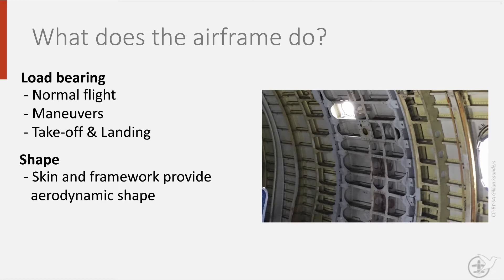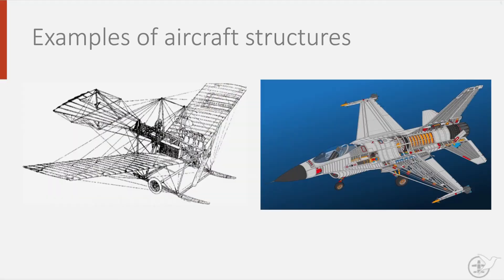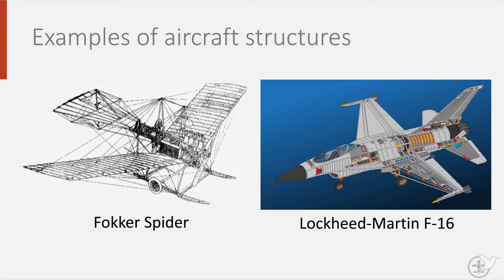Finally, at least nowadays, the airframe also provides those inside with protection from the environment. This was of course not always the case. If we look at this drawing of the first Dutch aircraft to fly, the Fokker Spin or Spider, you can see that sheltering the pilots from the environment wasn't a priority in the early days of flying. But things have come a long way since then. If we look at the F-16 Fighting Falcon, we can see that the pilot is fully encased.